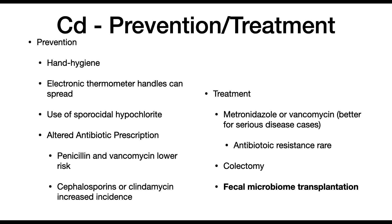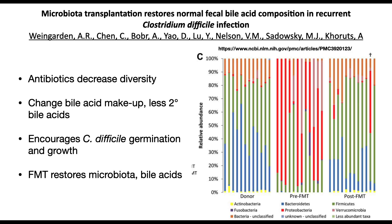Another exciting treatment is fecal microbiota transplantation. Research by Weingarten et al. indicates the disease arises when antibiotic treatment suppresses the normal microbiota. Compare the left panel — healthy donors — to the right panel — someone in the middle of a C. diff infection. Antibiotics decrease diversity and change the bile acid makeup. Fewer organisms in the microbiome can degrade bile acids produced by the gallbladder into secondary bile acids, and these secondary bile acids are inhibitory to C. diff. With fewer secondary bile acids, it encourages C. difficile germination and growth, allowing it to overgrow and cause all the problems it does.